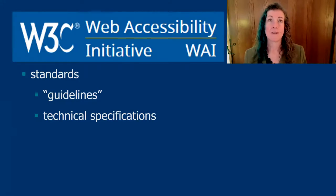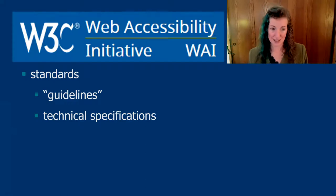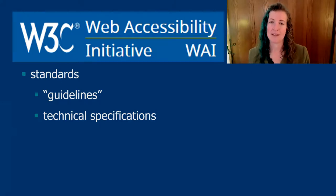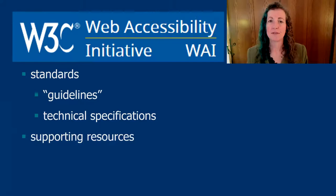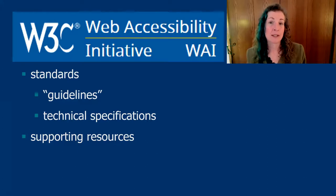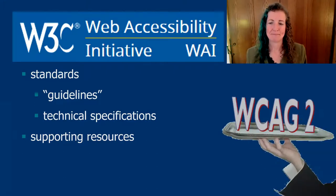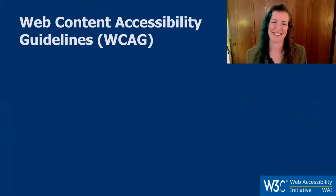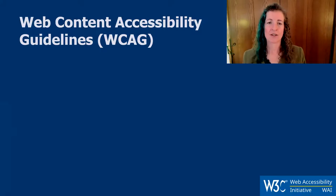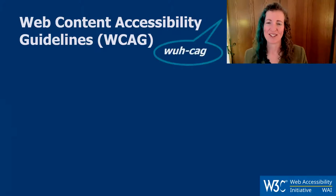At the W3C, we define different types of standards. I'm going to talk about the guidelines — that's one type — and then the technical specifications, which is like the underlying code. We also develop supporting resources, things that help you implement accessibility and the standards. One of those is WCAG — the Web Content Accessibility Guidelines, acronym WCAG, which I'll say as WCAG today.